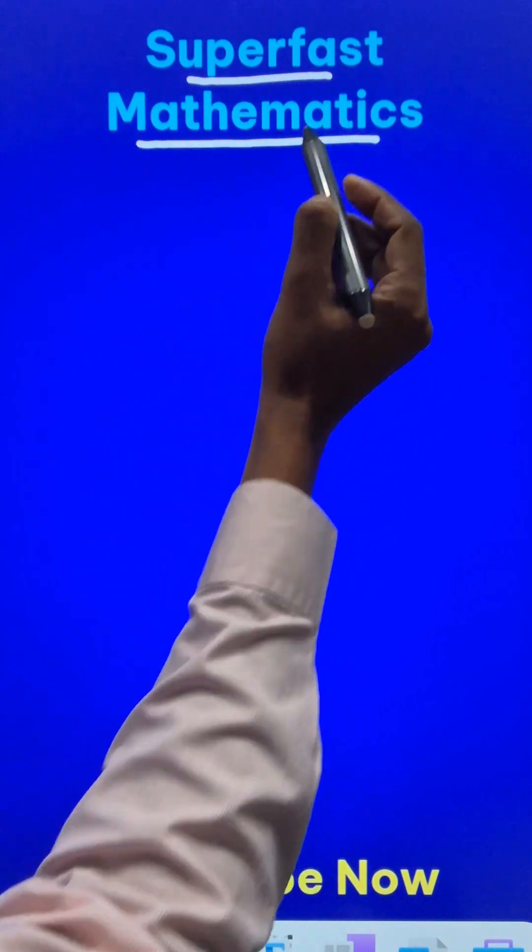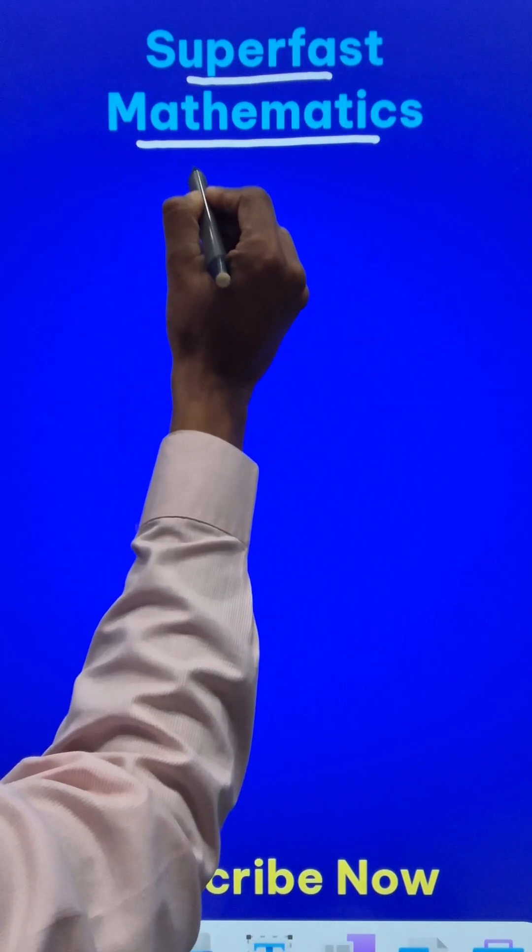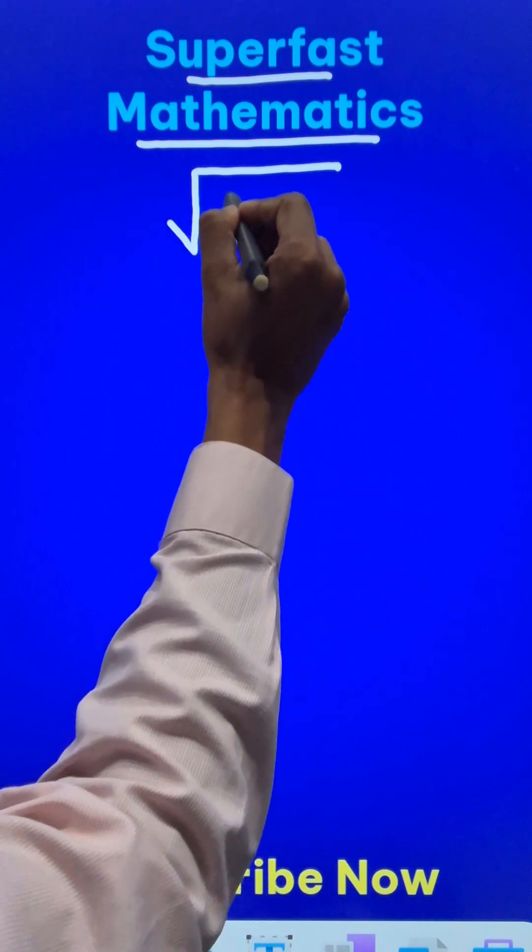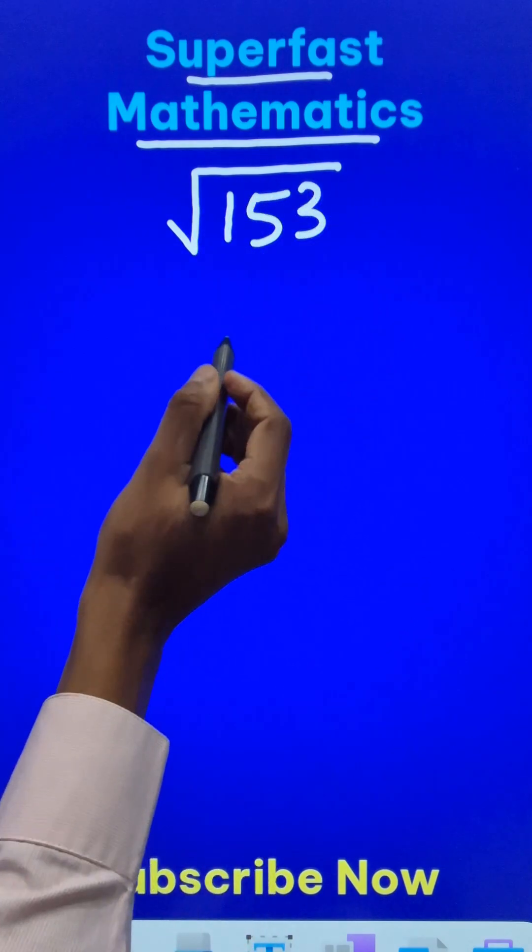Here is a super fast mathematics trick to find the square root of an imperfect square number like 153. So what do I do here?